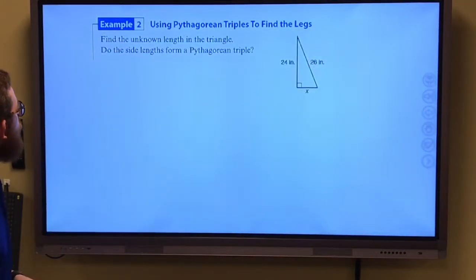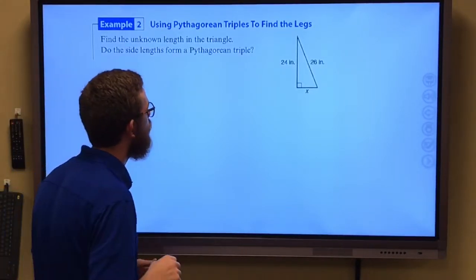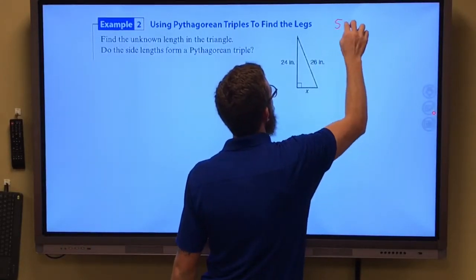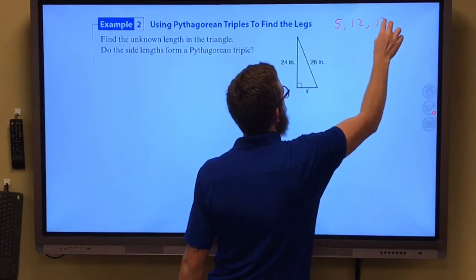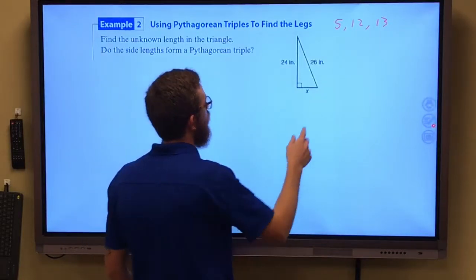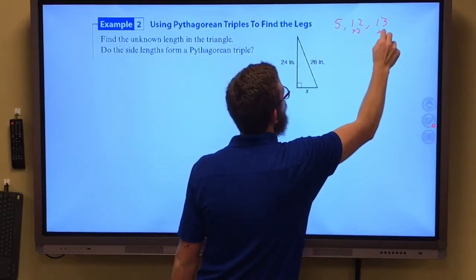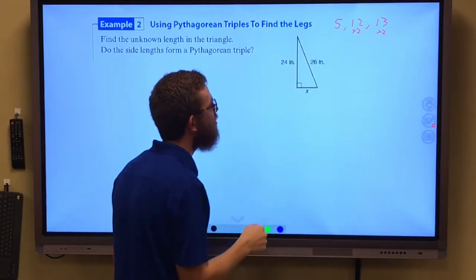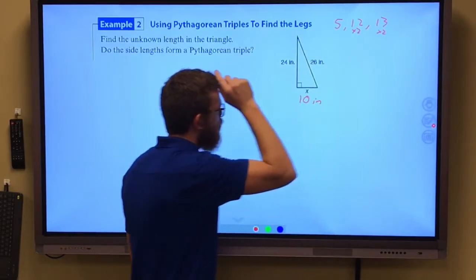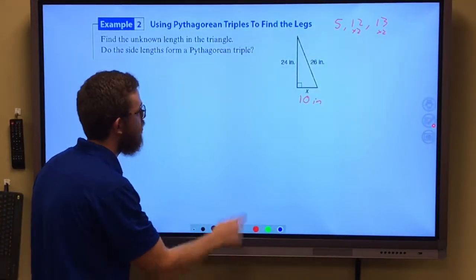It says find our unknown length in the triangle. Do the side lengths form a Pythagorean Triple? If we look at this one, we remember our 5, 12, 13 Pythagorean Triple. It looks like the 12 times 2 gave us 24. The 13 times 2 gives us that 26. And so, I would imagine 5 times 2 gives us 10. We have 10 inches, which would be that missing side. We can confirm that with Pythagorean Theorem here.